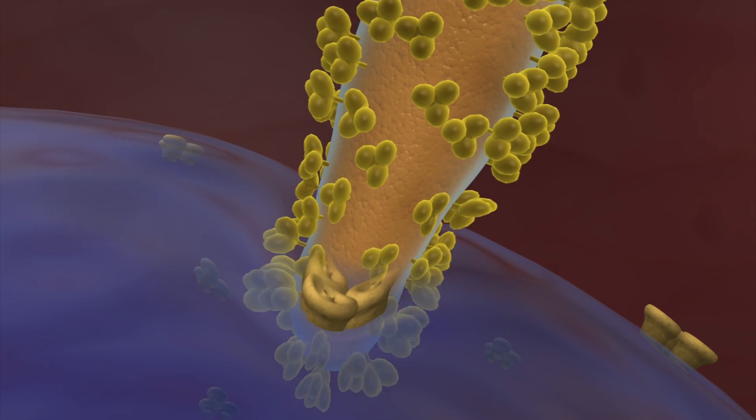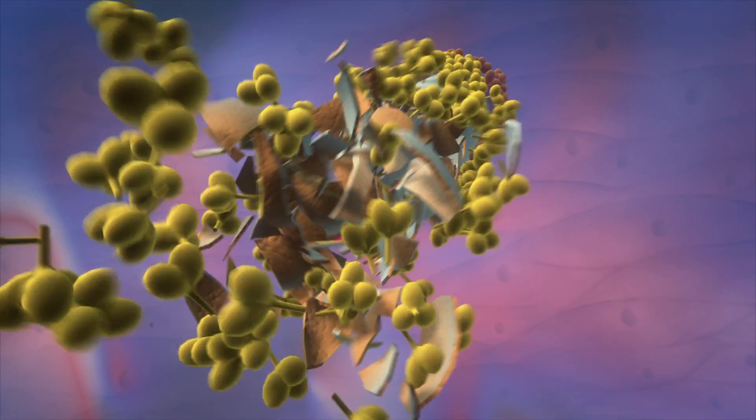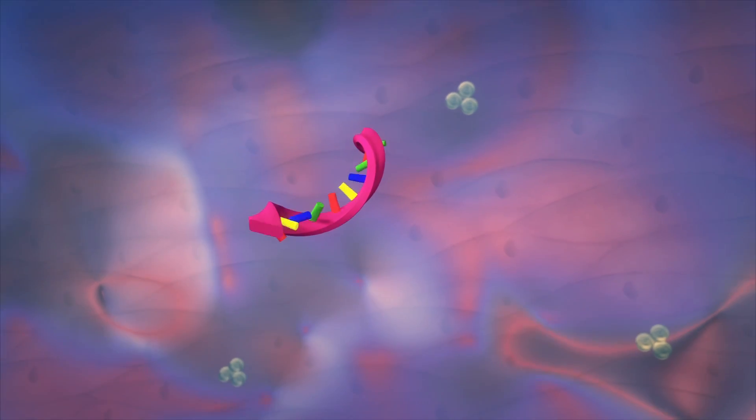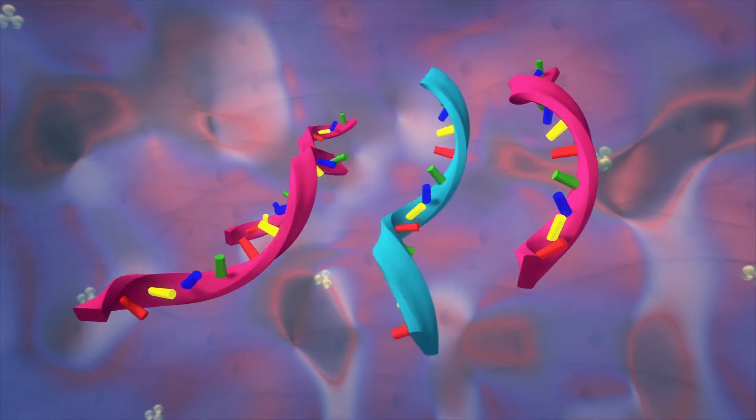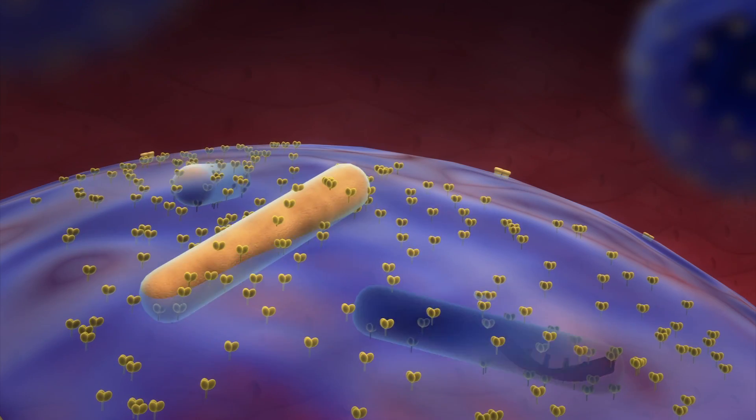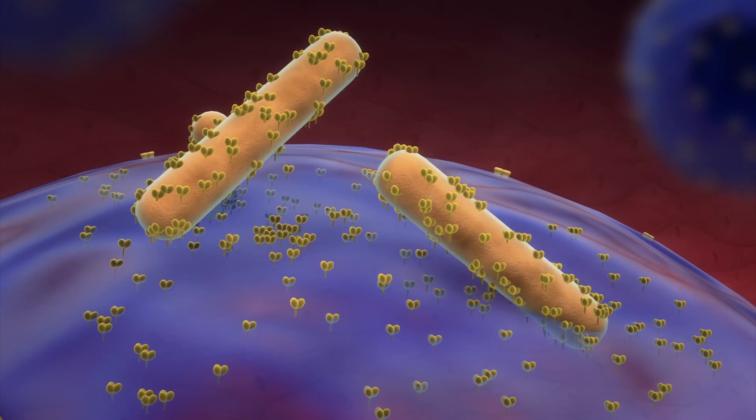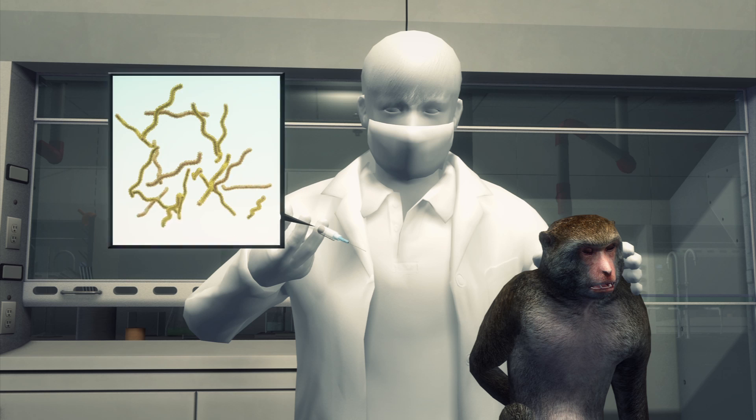Once inside a host cell, the virus releases its genetic material and starts replicating viral RNA. Newly-produced proteins envelop the RNA to create new viruses, which then leave the host cell in search for new cells to infect, over and over again.